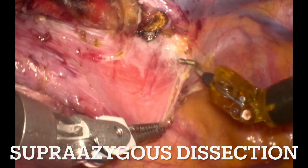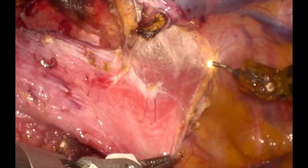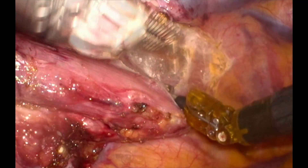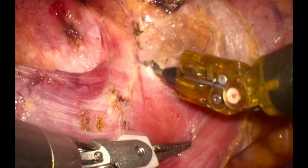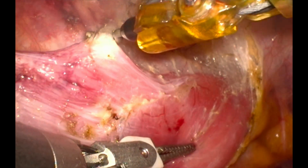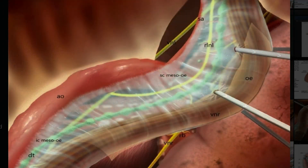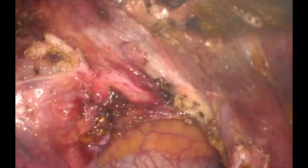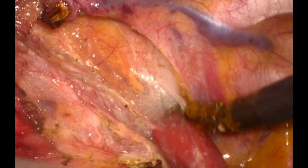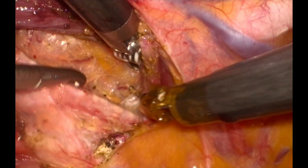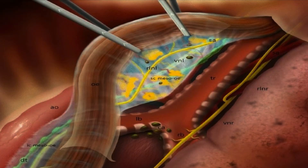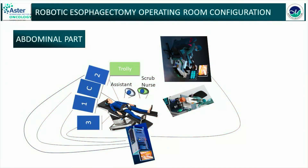Once the azygos vein is divided, we cut the mediastinal pleura superiorly and start the supra-azygos dissection. There will be a clear avascular space. The main concern with supra-azygos dissection is the thoracic duct crossing as well as the right and left recurrent laryngeal nerves. Once the esophagus is retracted to the left, the main important structures are the posterior wall of the trachea, the thoracic duct, and the left recurrent laryngeal nerve. Dissection is continued superiorly taking care not to injure the posterior membranous wall of the trachea as well as the right and left recurrent laryngeal nerves, removing all lymph nodes as possible. We continue the dissection till the thoracic inlet.